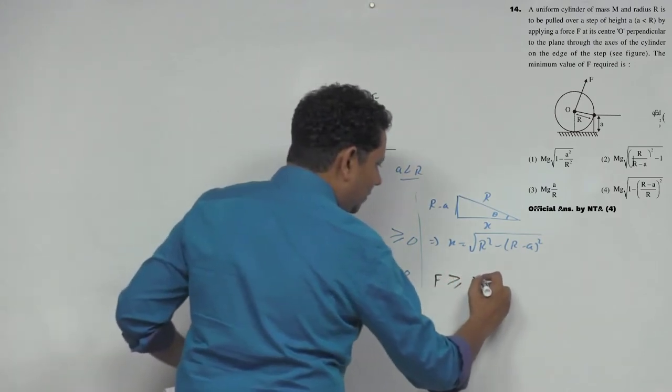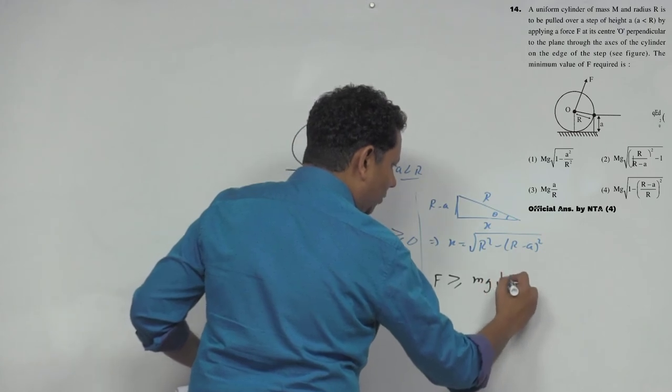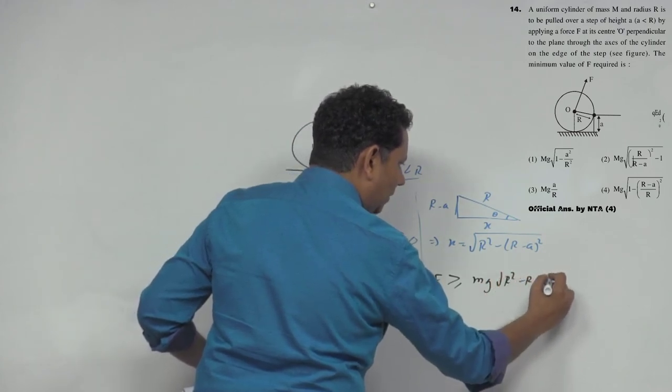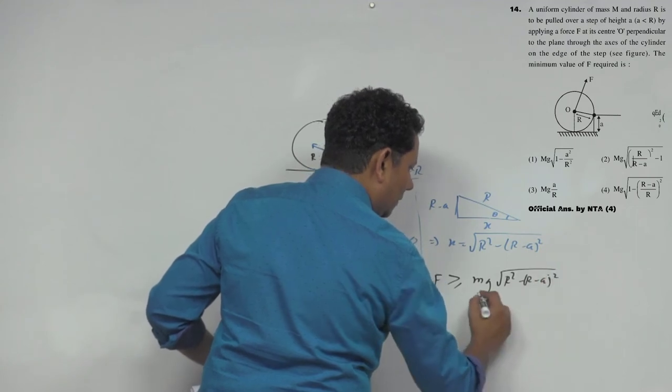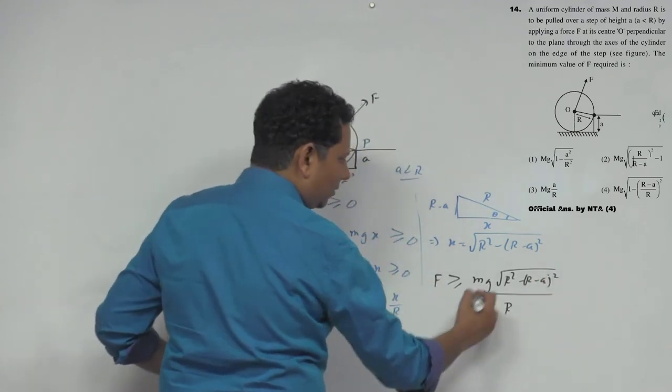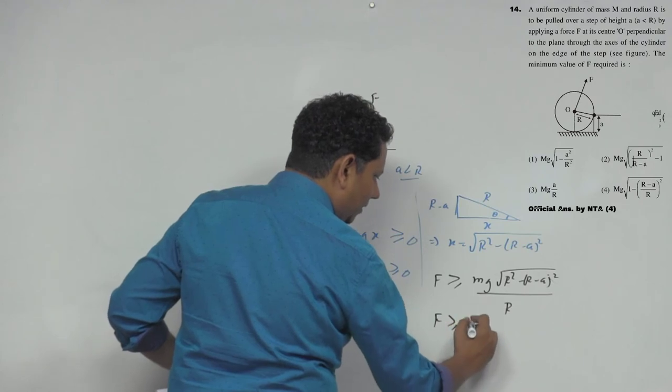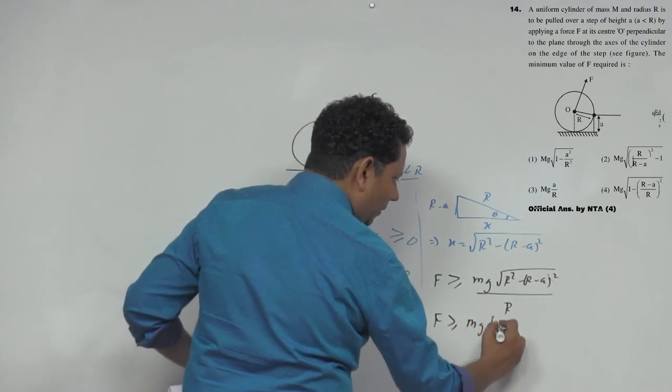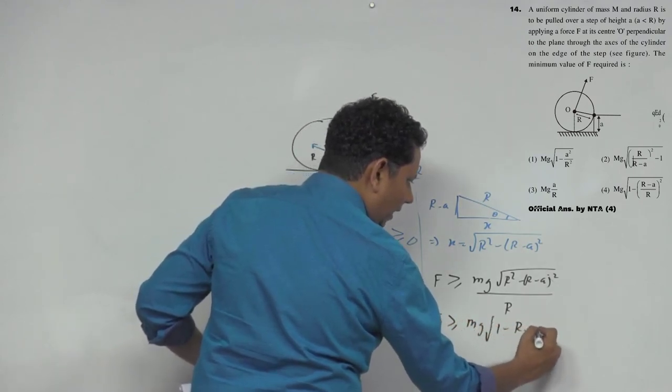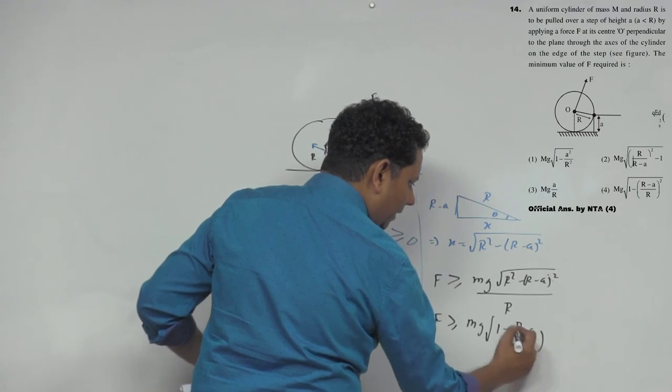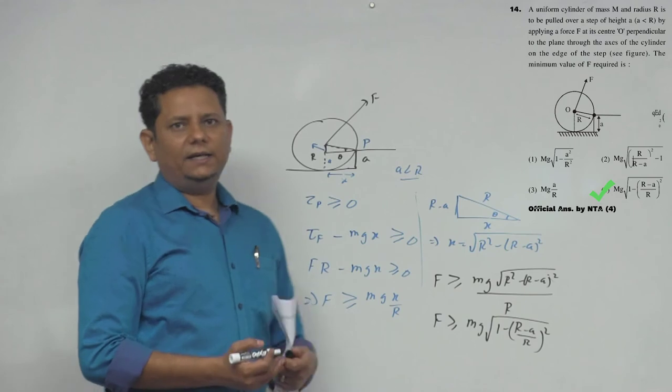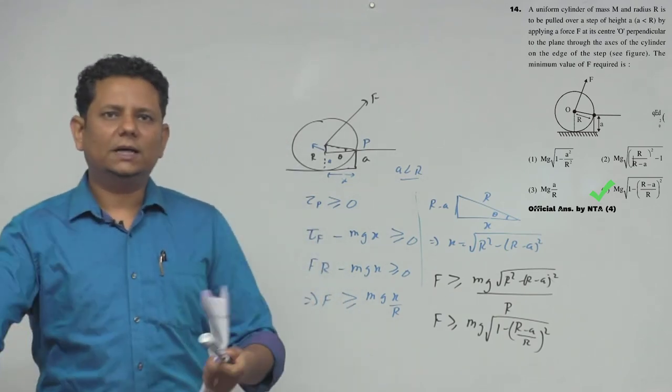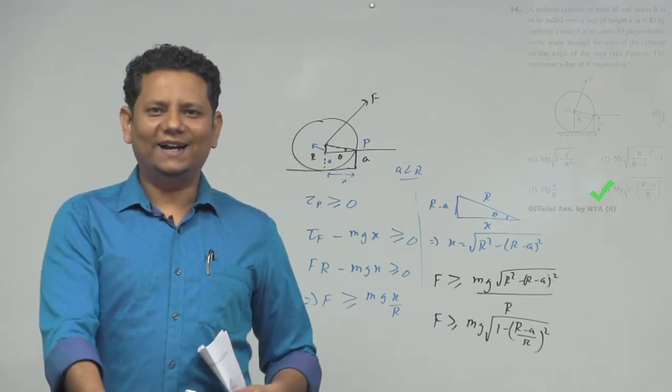So we can say that the force should be greater than or equal to mg multiplied by under root of r square minus (r minus a) square divided by r. If we take r under the root, F should be greater than or equal to mg under root of 1 minus ((r minus a) divided by r) whole square. This is your minimum value of force. So that means option number 4 would be the right answer.